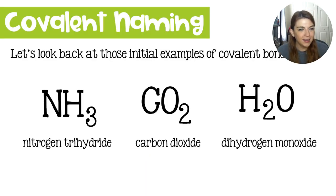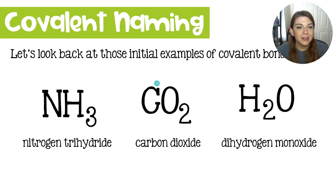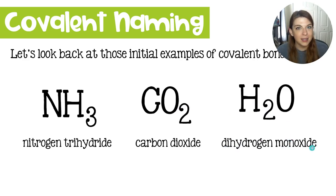Let's take a look at these again. Nitrogen trihydride — what does that really tell you? It tells you there's a nitrogen and three hydrogens; it tells you the formula. Carbon dioxide — I know 'bi' is often the prefix we use for two, but in chemistry we use 'di.' Carbon dioxide tells you there's a carbon and two oxygens. Dihydrogen monoxide — 'dihydrogen' tells you there are two hydrogens, and 'monoxide' tells you there's just one oxygen.